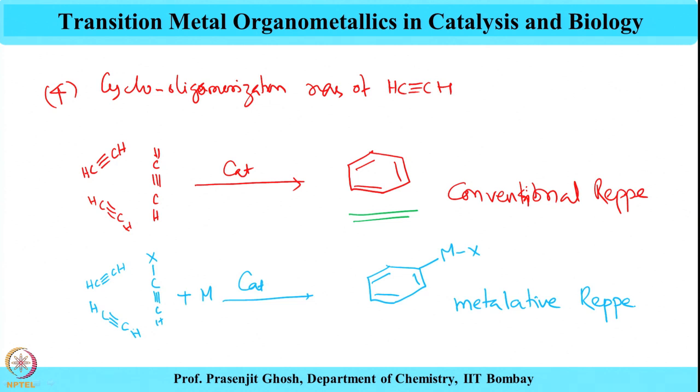What we see in today's lecture is that Reppe chemistry has a dimension that is unique and very interesting: not only can simple functionalized acetylene products be formed through vinylization, ethylization, and hydrocarboxylation, but Reppe reactions can be extended more conveniently to produce more complex and intriguing aromatic compounds. In the next few minutes, we will focus on different kinds of Reppe cyclo-oligomerization reactions.